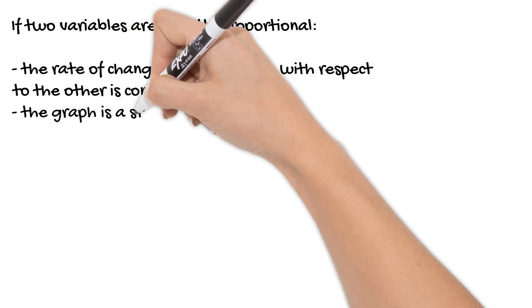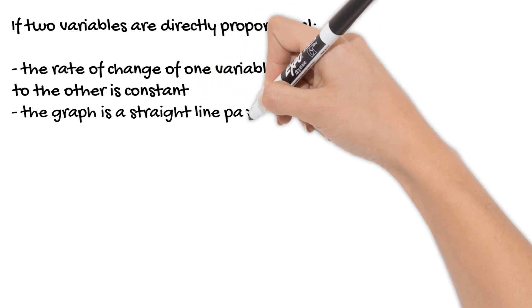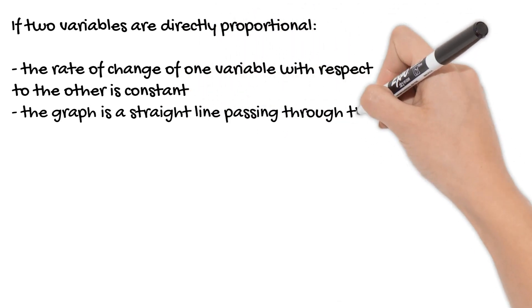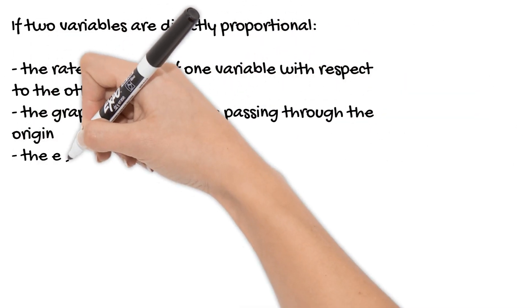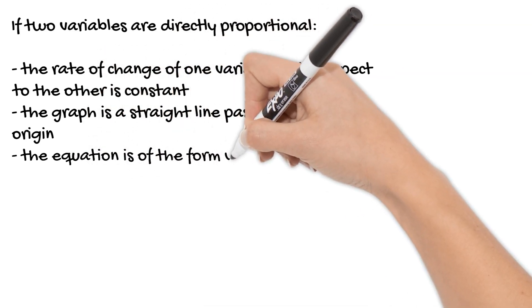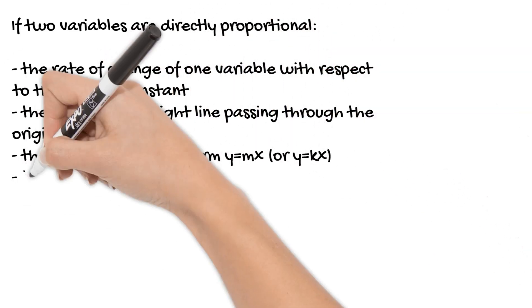So what this will look like is a straight line graph that passes through the origin, and the equation of this graph looks like y equals mx.